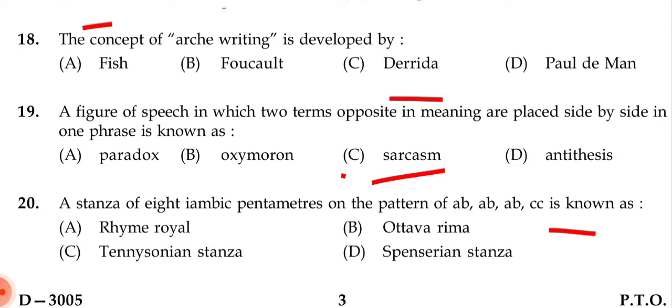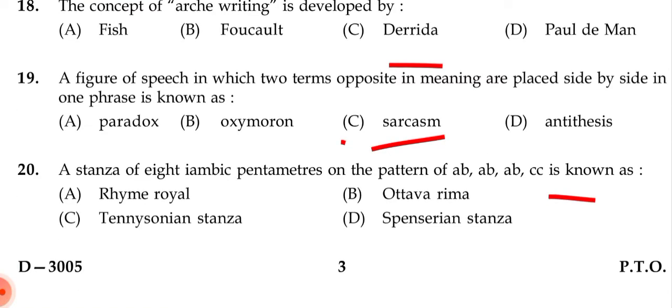Next question: A figure of speech in which two terms opposite in meaning are placed side by side in one phrase is known as — (a) paradox, (b) oxymoron, (c) sarcasm, (d) antithesis. The correct answer given is (c) sarcasm — please verify this answer independently.